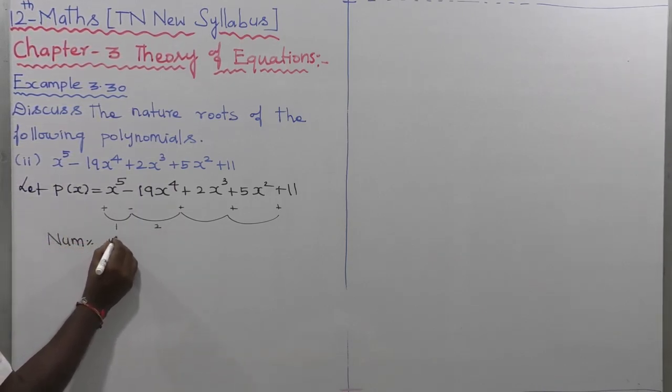So this one is negative, this one is positive. Therefore, the number of positive real roots equal to 2.